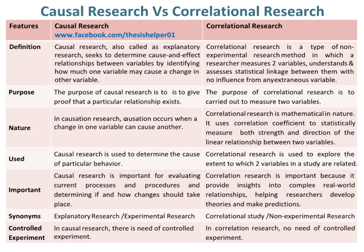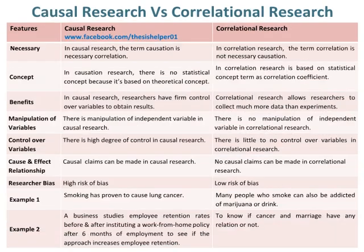In causal research, there is a need for a controlled experiment, whereas in correlational research there is no need for a controlled experiment. In causal research, causation is a necessary correlation, whereas in correlational research, correlation is not necessarily causation.